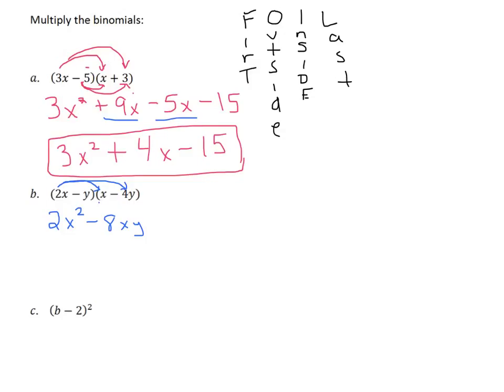Now negative y times a positive x. Negative y times a positive x is a negative. Again, I'm going to write this xy. Because if I wrote yx, I might not know that I could combine these terms together. So just write them in alphabetical order.